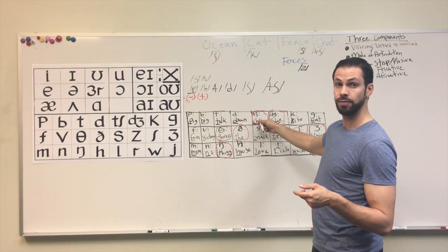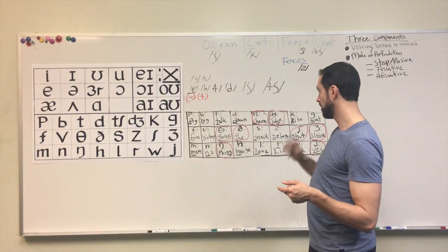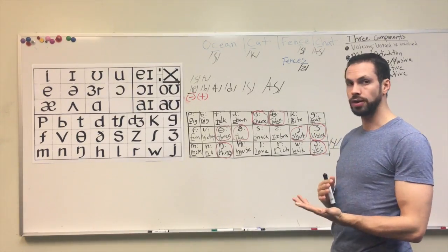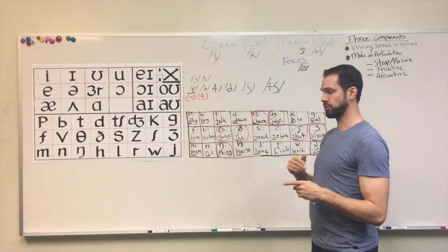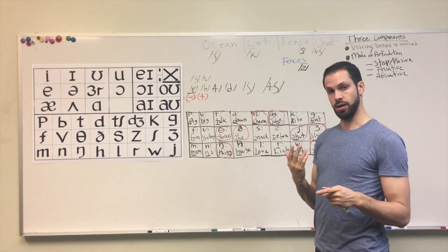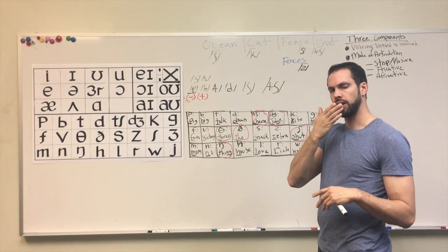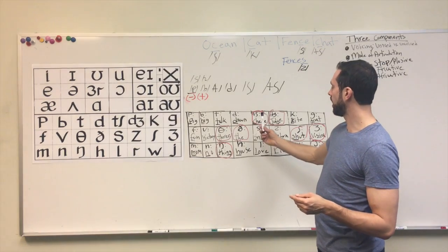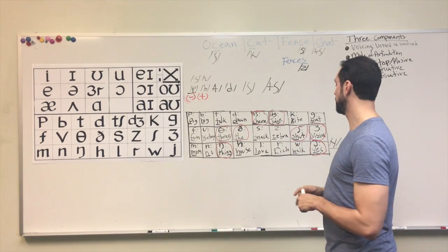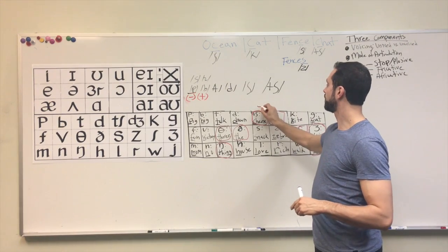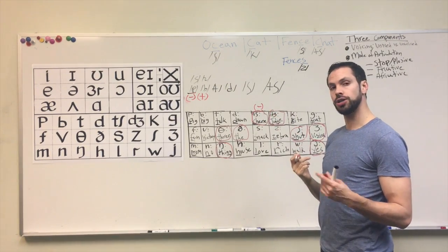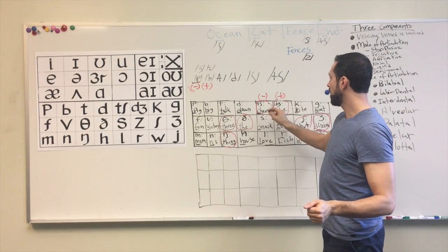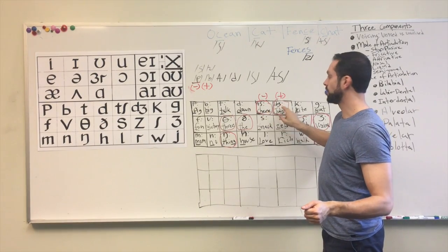Now, can you guess which one is voiced and which one is unvoiced out of these two? Remember, one of the ways to tell if a sound is voiced or unvoiced is with air. So when we pronounce chuh and juh, which one has more air? Chuh. Juh. Chuh — can you hear that air come out? Yeah. This one, chuh, is unvoiced, whilst the juh is voiced.